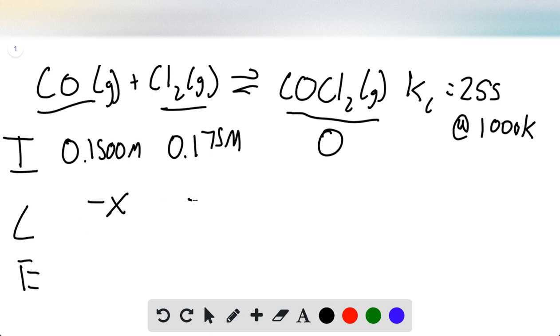Our change here is minus X for the reactants and plus X for the product since they're all in a one-to-one molar ratio. So our equilibrium is 0.1500 minus X, 0.175 minus X, and X.